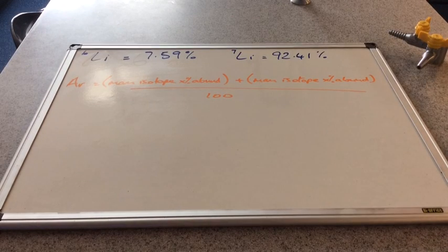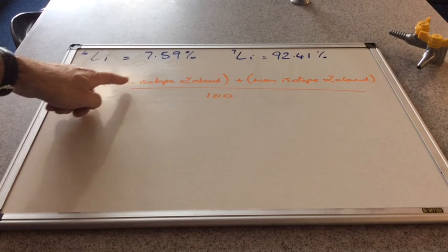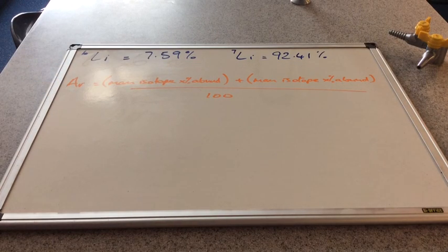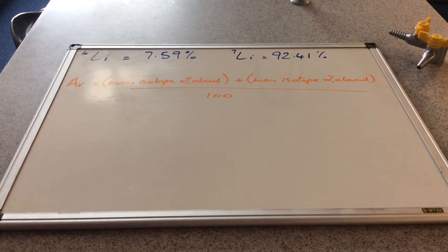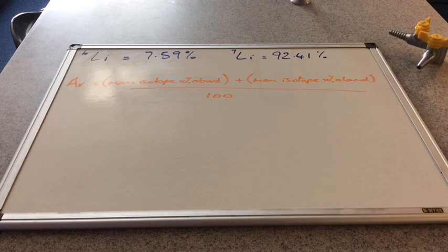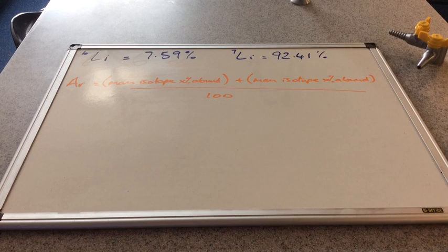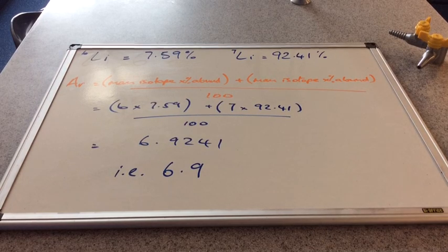There's the formula that we use to calculate the relative atomic mass, AR for short. It's the mass of the isotope multiplied by its percentage abundance, and then you add to that the mass of the other isotope times its percentage abundance. Obviously, if there was a third isotope, you would just stick another bracket on there. And because these have been expressed as percentages, we divide by 100. And there's the answer. So there's our 6.9 that we see on the periodic table.